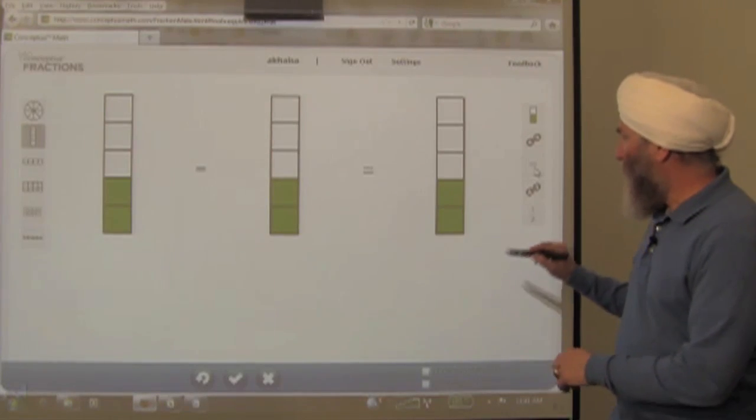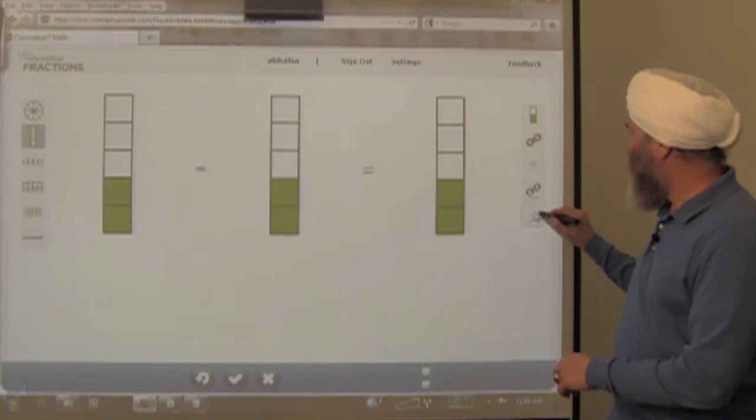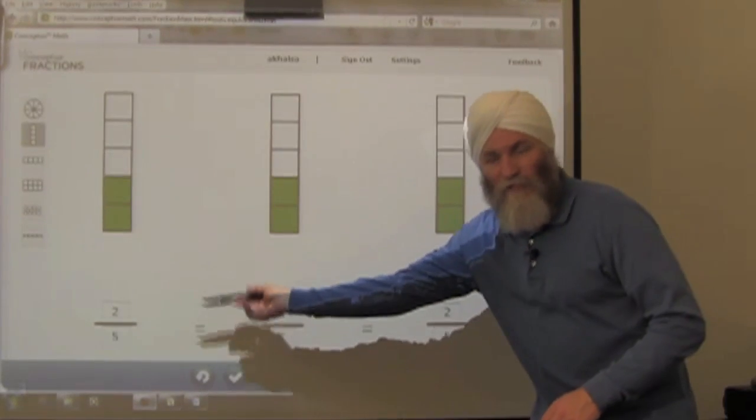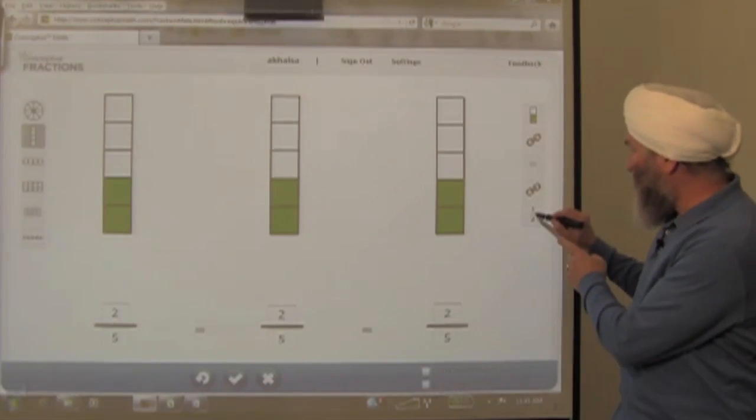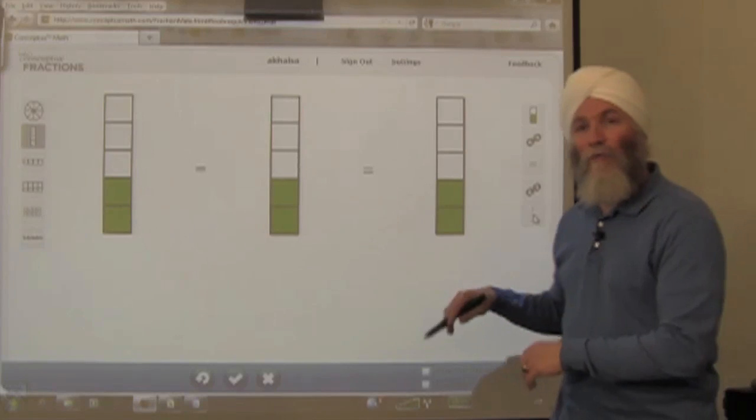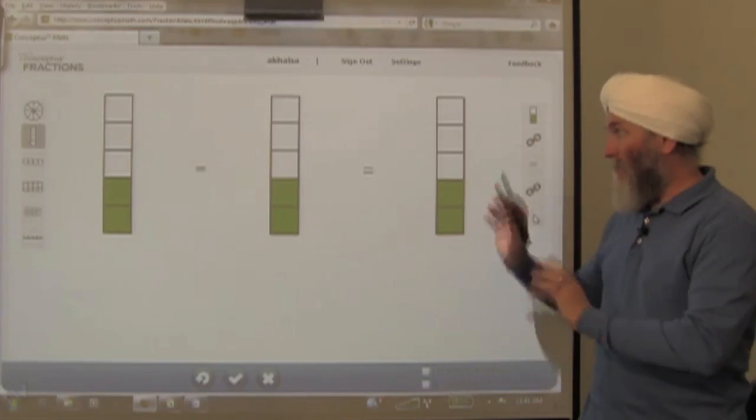I actually started by entering fractions right here. I just typed two-fifths, two-fifths, two-fifths. And then I hid this part of the screen. We call it the fractions layer. So that's how I got it all set up.